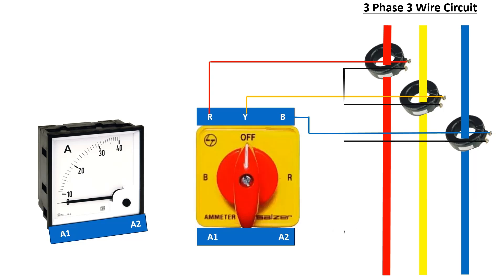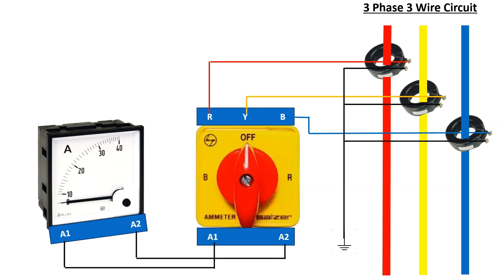It is important to note that all the current transformer other terminals are to be shorted to each other and connected to ground. Now, we will connect the A1 terminal of the ammeter and selector switch to each other. Next, we will connect the A2 terminal of the ammeter and selector switch, and connect the same wire to the CT common terminal which has been grounded.